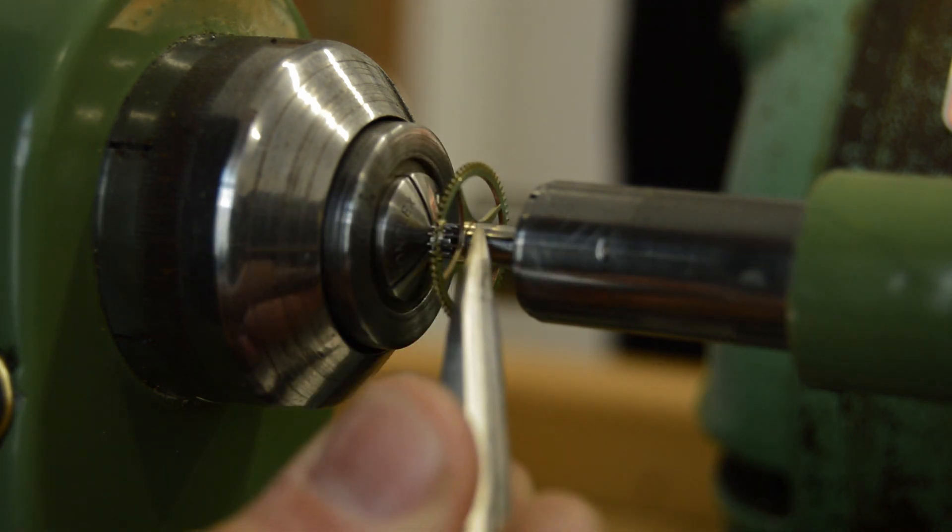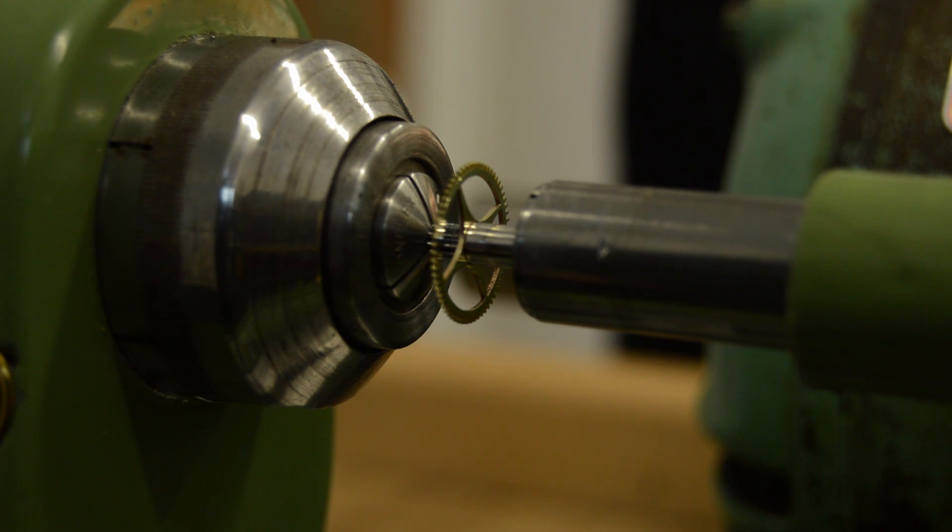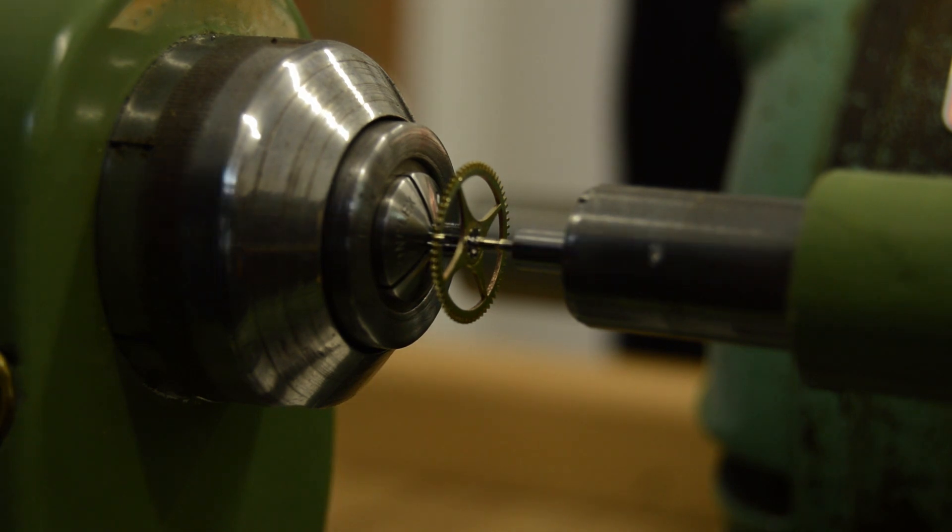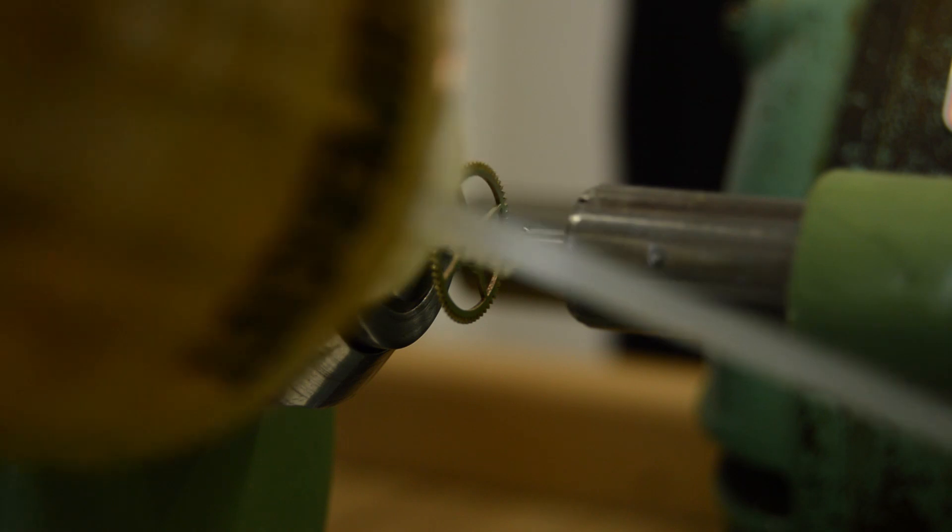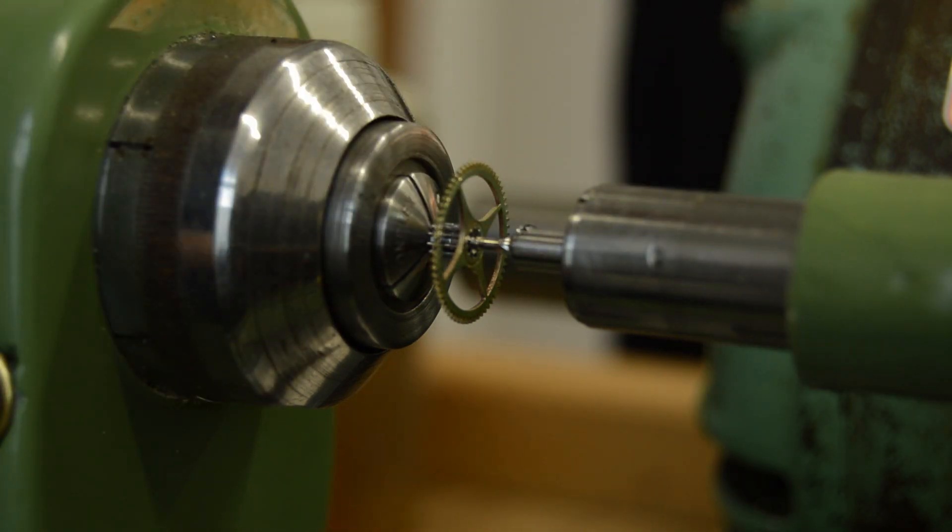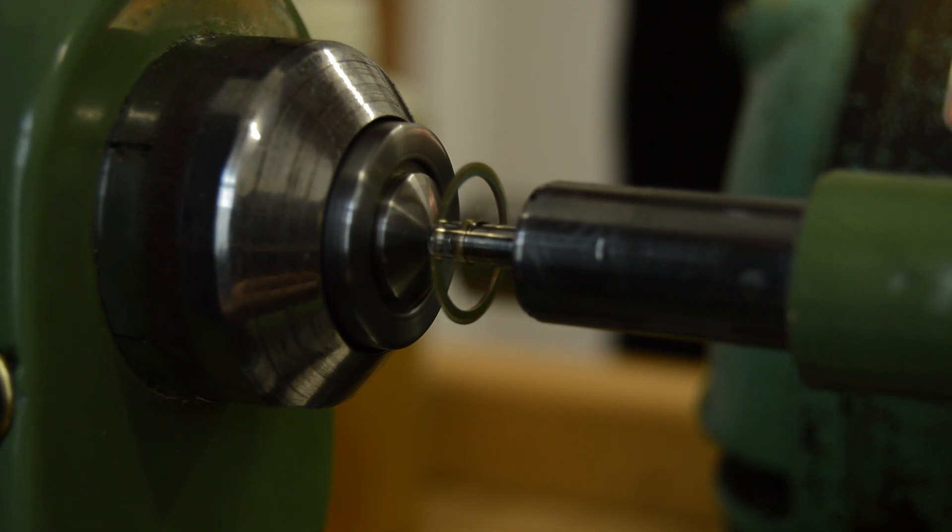And it should just deform the brass of the wheel just that little bit that it spreads it into the gaps in between the pinion leaves. So we'll put a little bit of cutting oil on just to help it along and prevent it from galling. And then go.